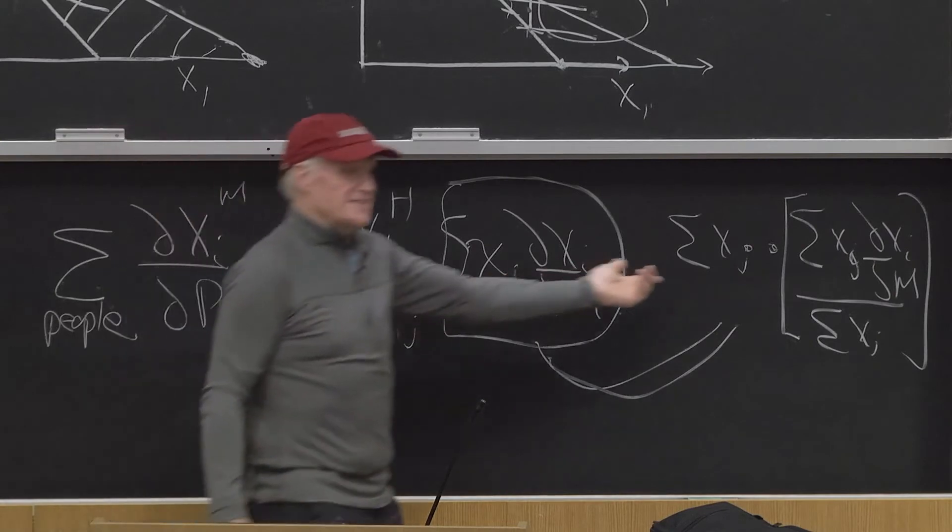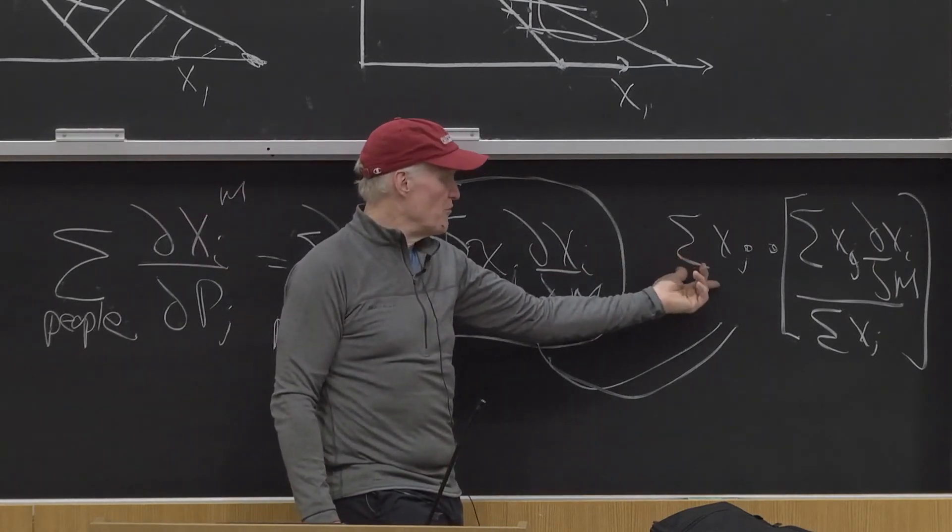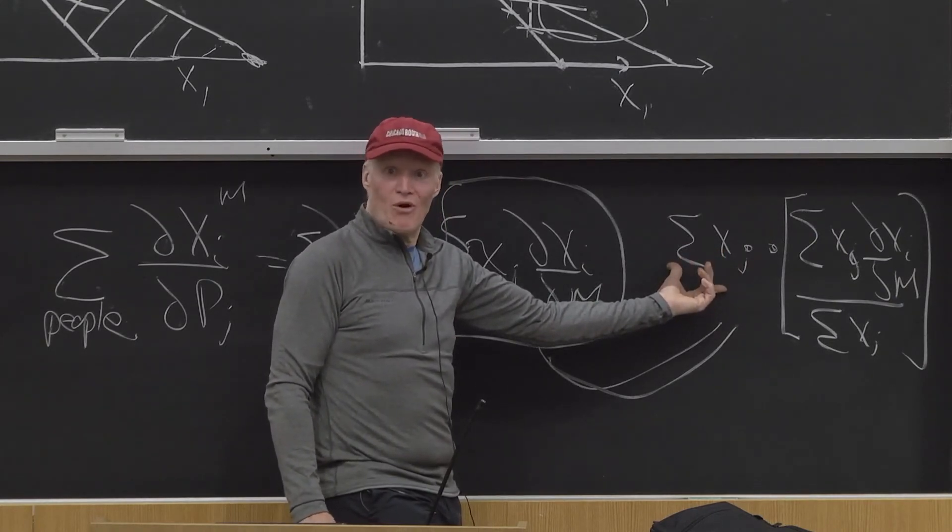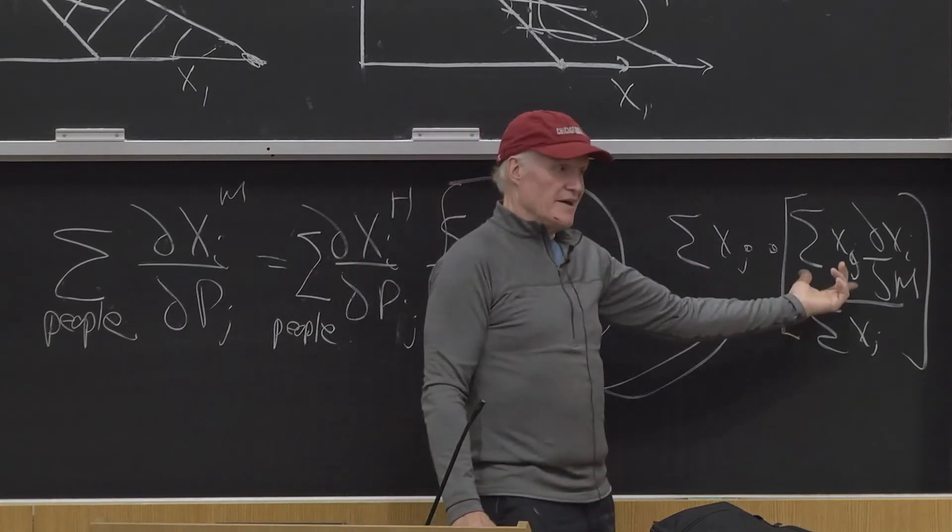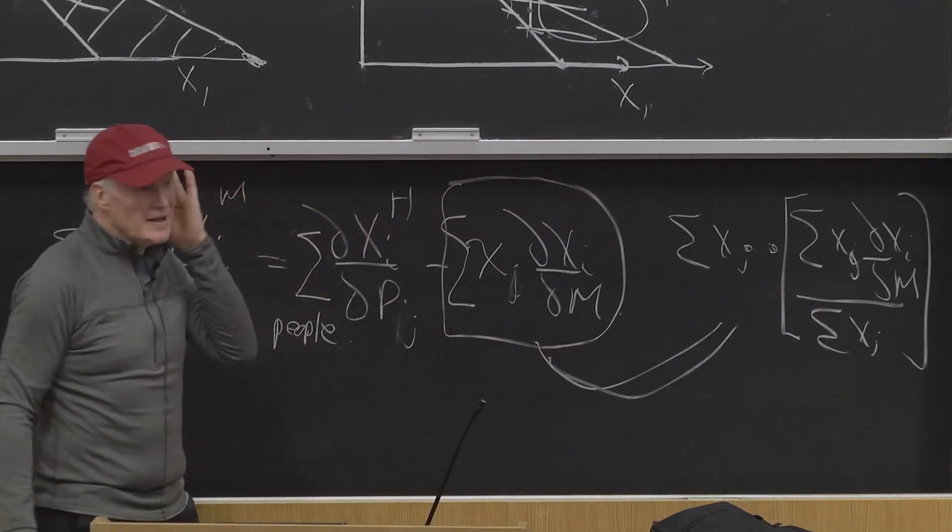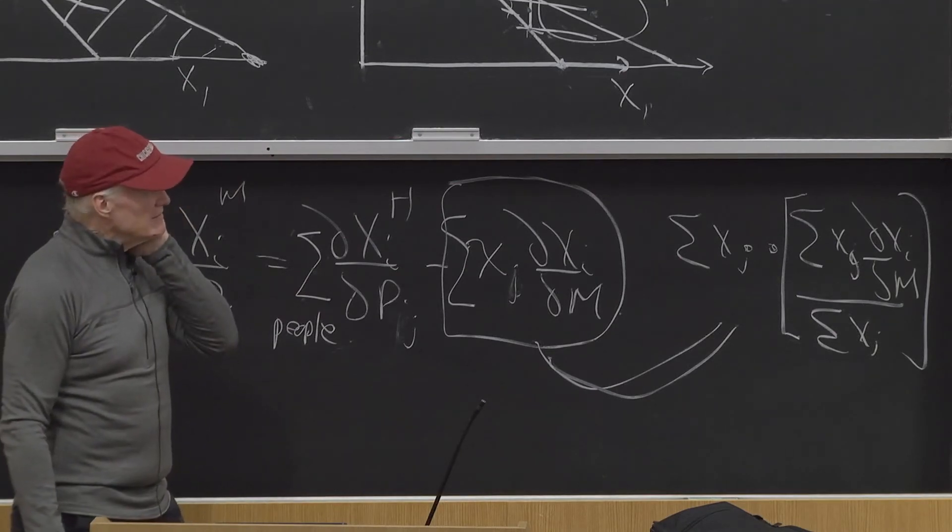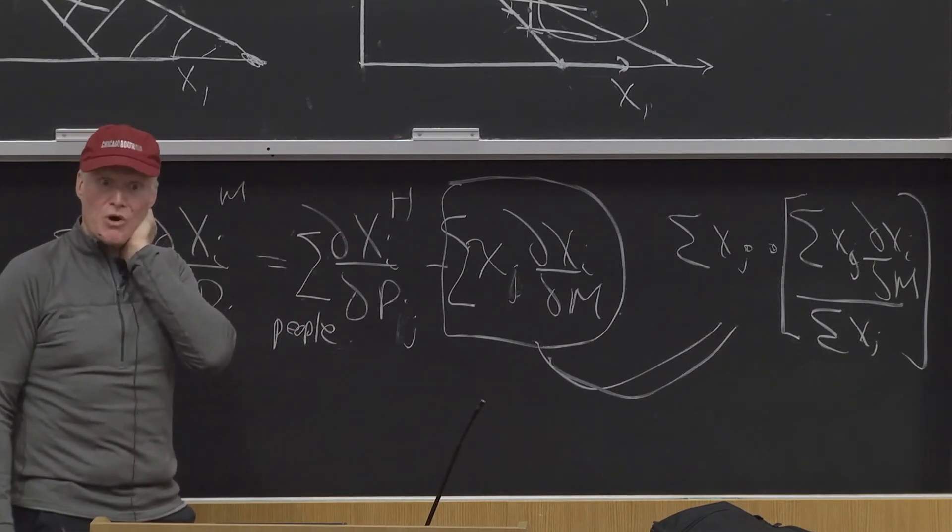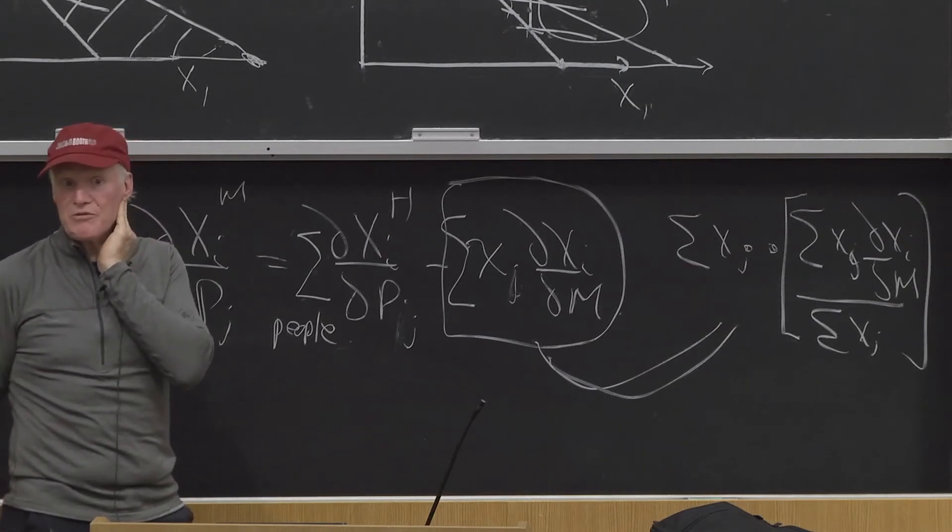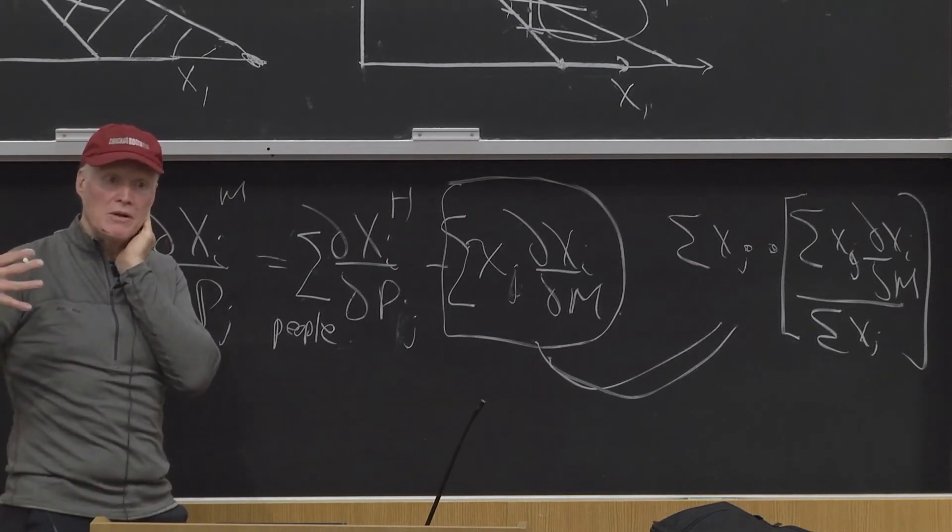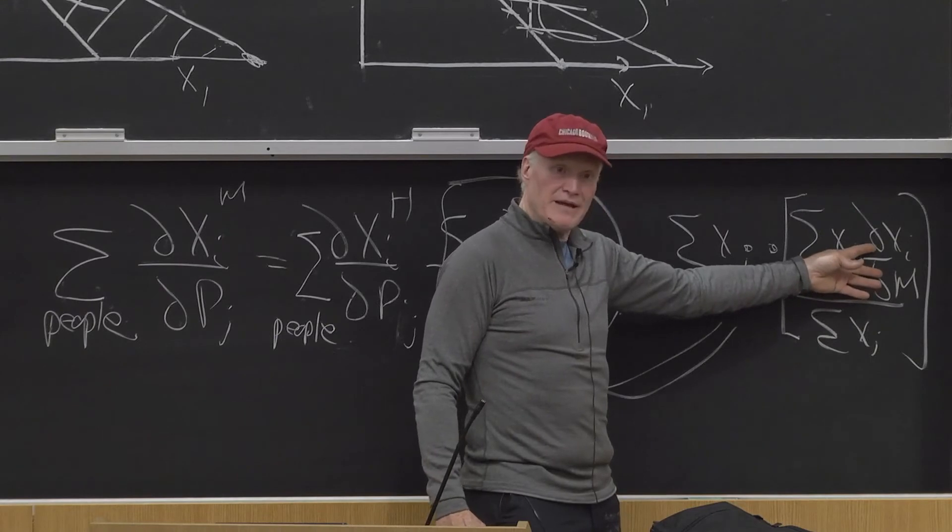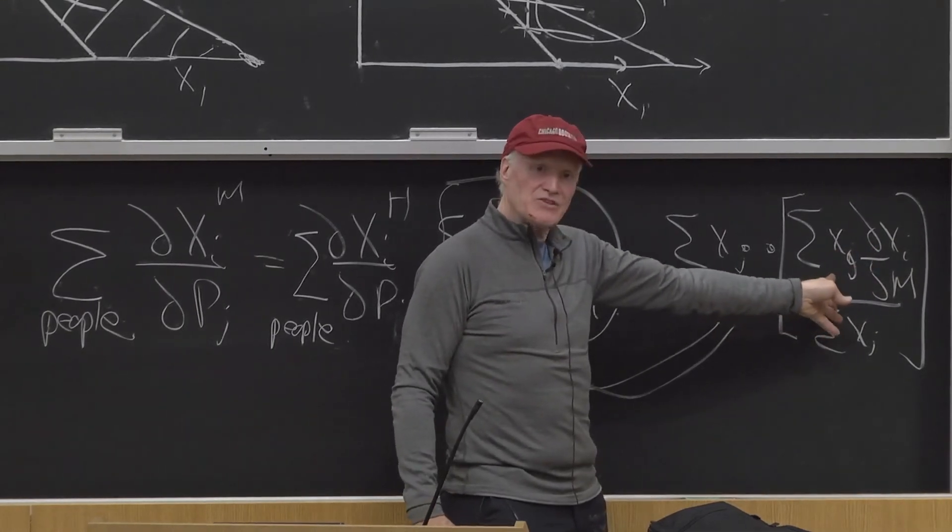This is a nice number. I understand what that number is. What is the sum over people of xj? That's total consumption. This is the average across people of their marginal consumption of good i with respect to income, but it's weighted by their consumption of good j.